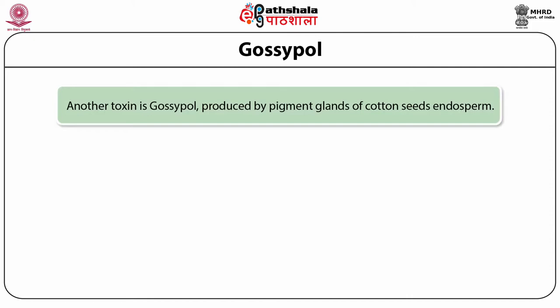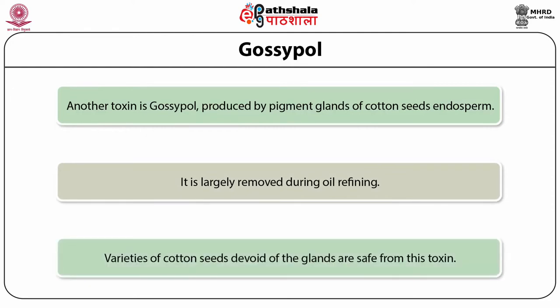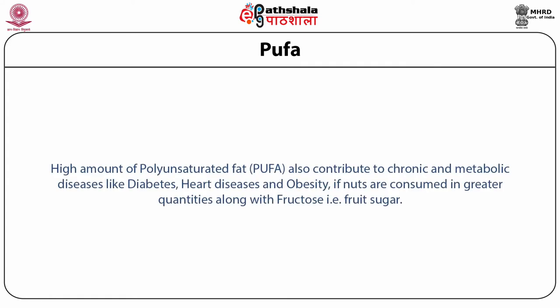Another toxin generally found in cotton seed is gossypol. It is produced by the pigment glands of cotton seed, and is largely removed during oil refining. Certain varieties of cotton seeds devoid of the glands are safe from this toxin. Regarding PUFA — polyunsaturated fat — although nuts are rich in polyunsaturated fat, a high amount of PUFA can also contribute to chronic and metabolic diseases like diabetes, heart disease, and obesity if nuts are consumed in greater quantities along with fructose.